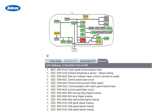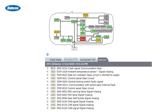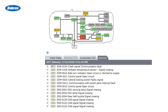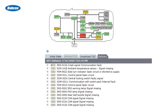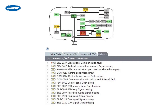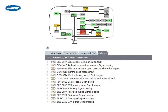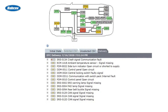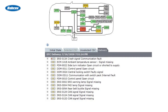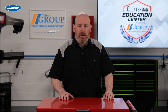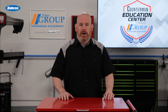In addition to these standardized DTCs, many vehicle manufacturers also have their own unique manufacturer-specific codes, which start with a 1. These codes provide additional information about issues specific to a particular make and model of vehicle. Understanding these manufacturer-specific codes can be crucial in diagnosing and resolving complex problems, as they often offer more detailed insights into the vehicle's systems. Recognizing the differences between these code types can help you better understand the nature of the problem and guide you towards the appropriate troubleshooting steps.